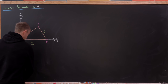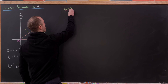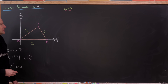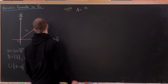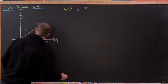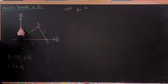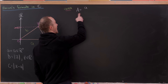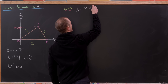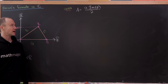Now let's get a formula for the area from this setup. The area is one-half base times height. We take the base to be A, and we just need the height. If we drop a horizontal line from Z to the imaginary axis, it intersects at the imaginary part of Z. So the area equals A times the imaginary part of Z, all over 2.